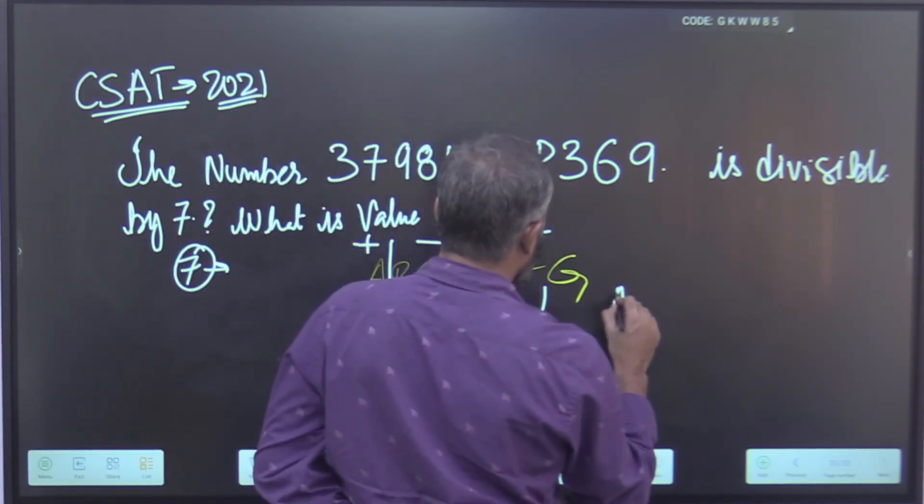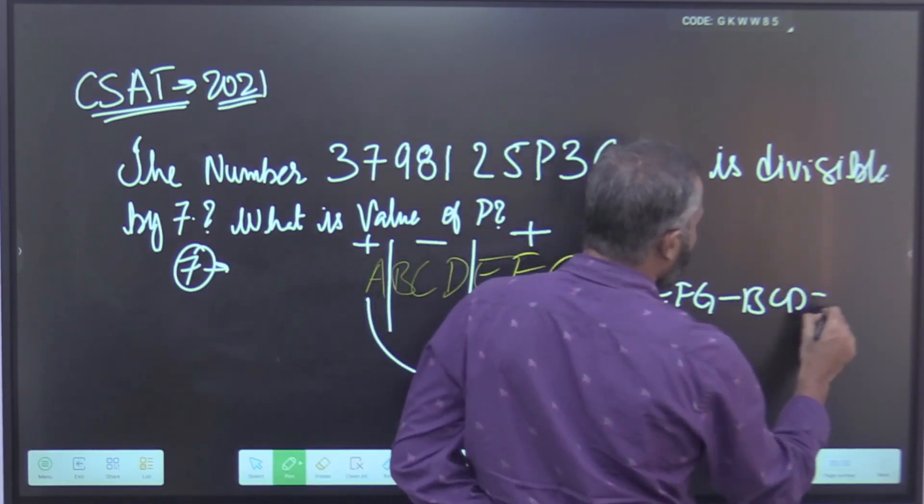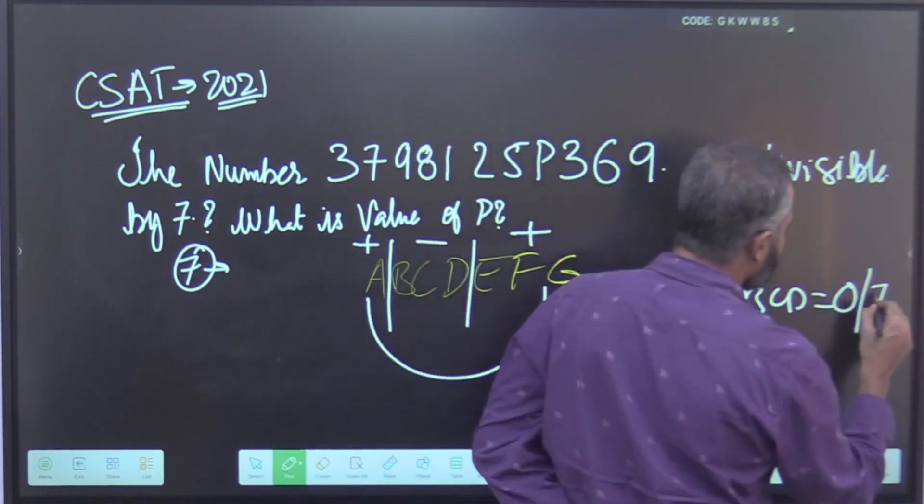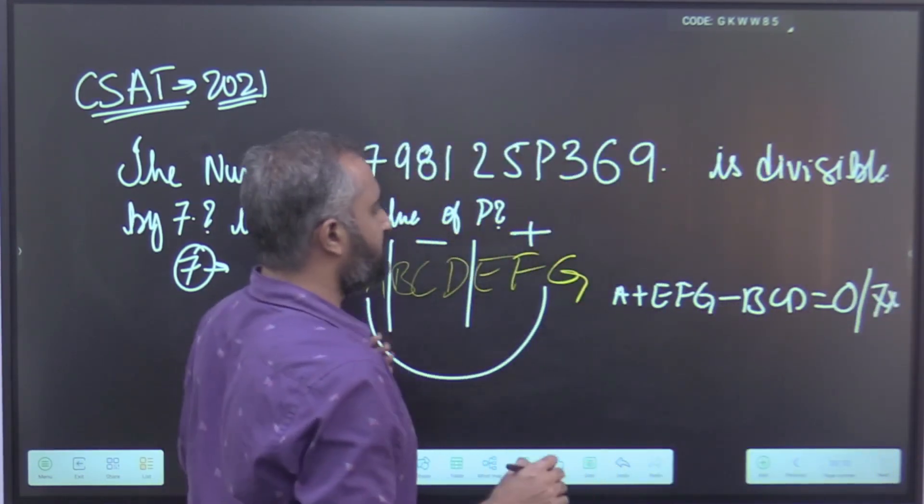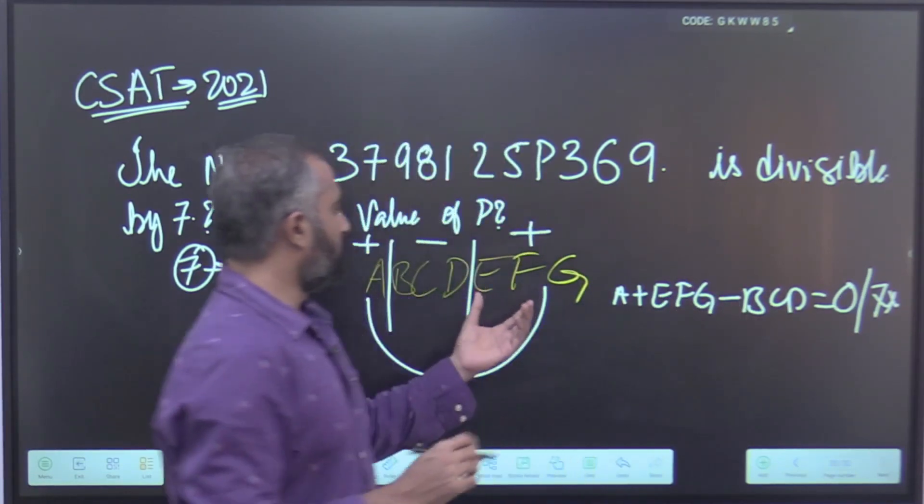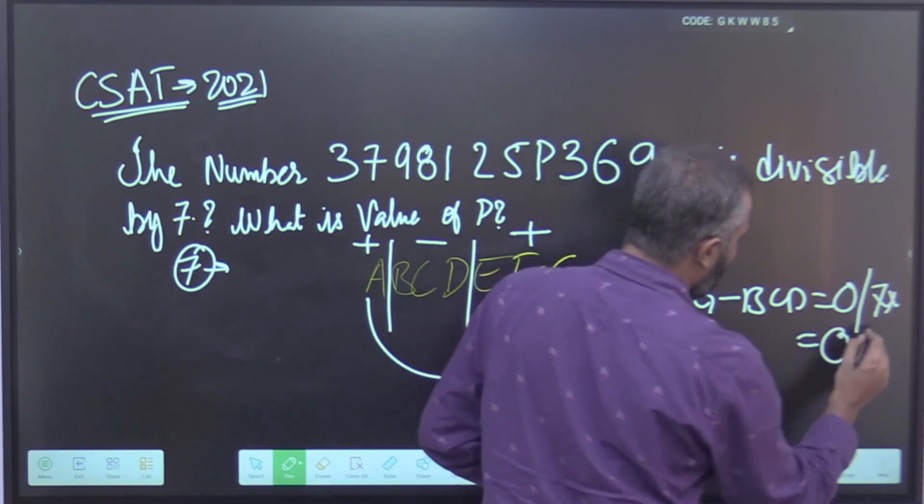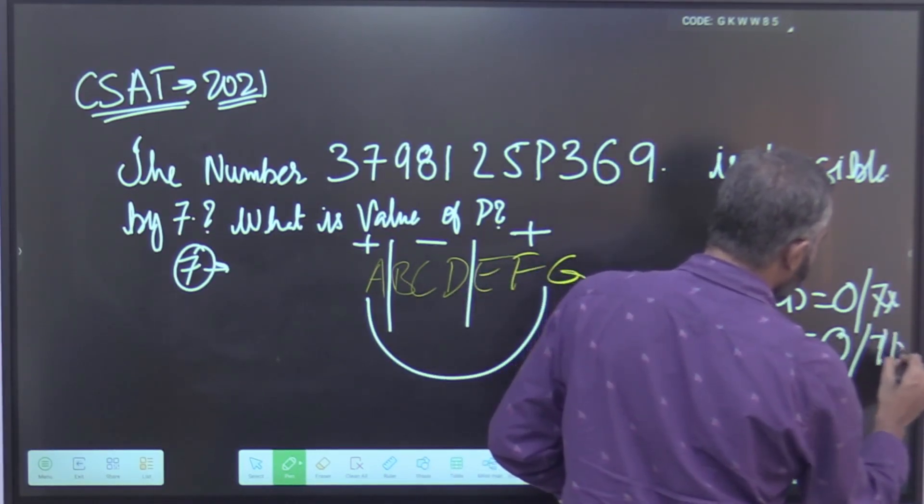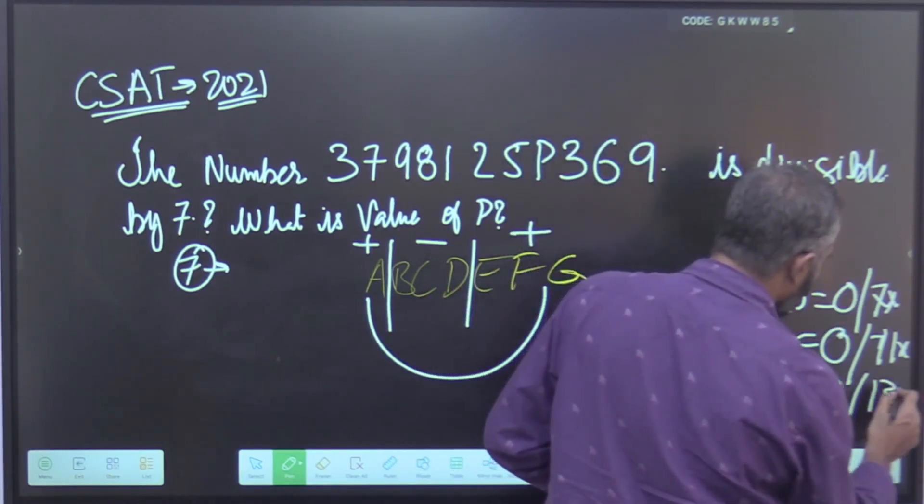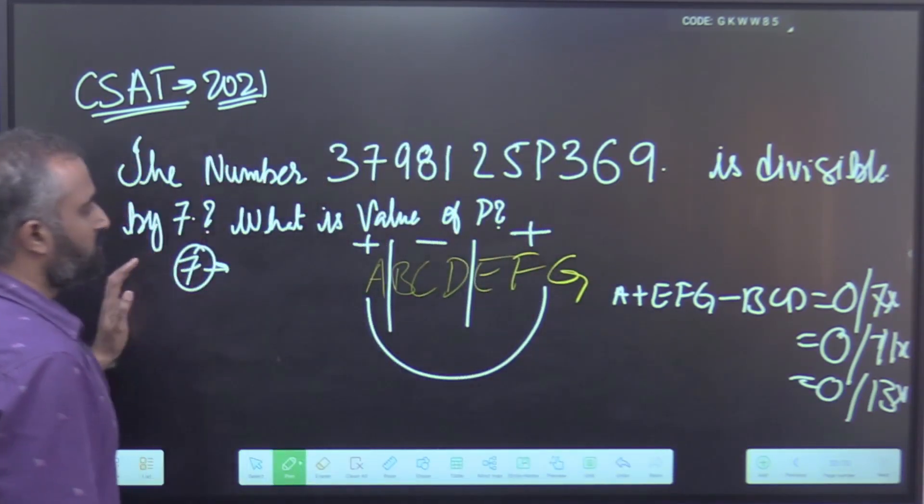So, a+e+f+g minus b+c+d, what is the resultant you get? It should be either 0 or a multiple of 7. This is the rule for 7. For 13, the same case applies: divide a number into blocks of 3 and apply the same. If this result is 0 or a multiple of 13, then that number is divisible by 13. So this is the first part.